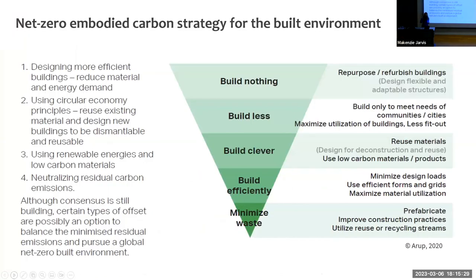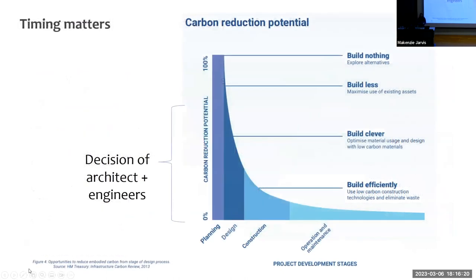The Carbon Leadership Forum created a road map to zero embodied carbon buildings, showing the number of different entities that need to work together toward what we call carbon smart building materials. Critical within that is the architect and engineer's role. Within ARIP, we have a framework I've found helpful: a loading order of priorities for getting to net zero carbon. Ideally you start with building nothing — then building less, building clever (reusing materials and choosing low carbon materials), building more efficiently using less material for the same function, and minimizing waste.